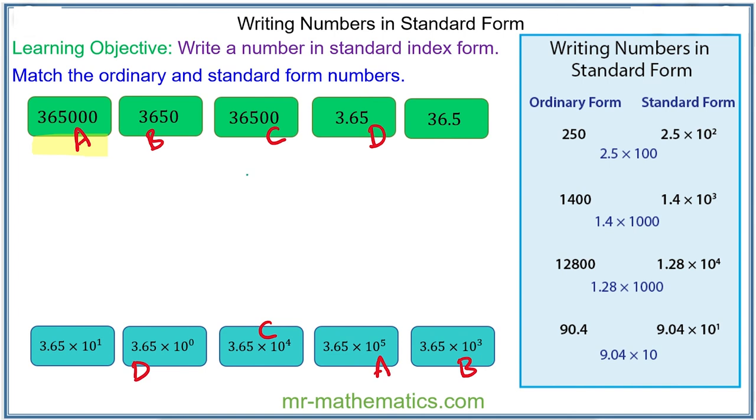And finally 36.5 we write as 3.65 times 10, which is 3.65 times 10 to the power of 1. So as you would expect, this one matches with this one.